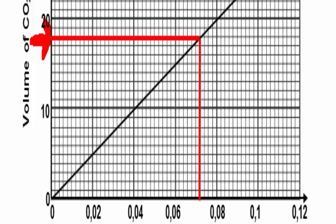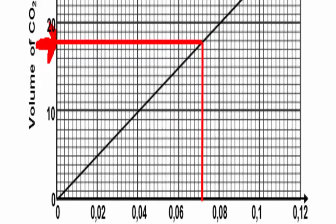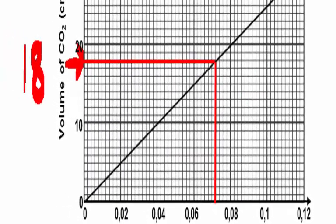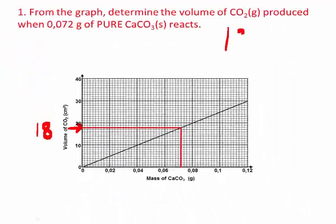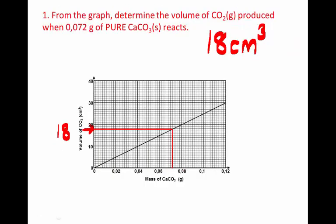This is very easy to read because here 10 divisions stand for 10 units, so each unit stands simply for 1. It's 18. So our answer is 18 centimeters cubed of carbon dioxide would be produced when that mass of calcium carbonate reacts.